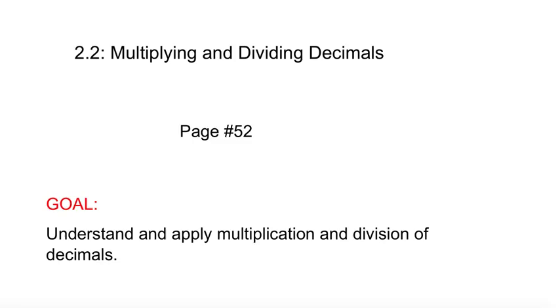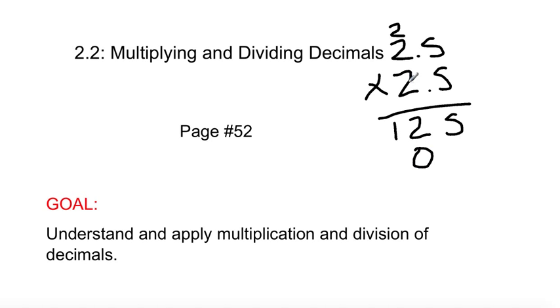Now, you've done this before, so it's pretty easy stuff. Let's just run through a quick example here. Quick example, 2.5 times 2.5. This is stuff you've seen before. 5 times 5 is 25. Carry the 2 over. 2 times 5 is 10, plus 2 is 12.